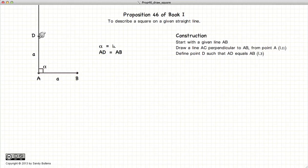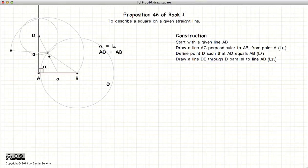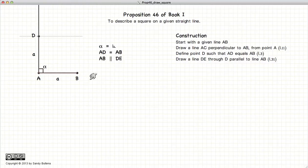Next, to draw a line parallel to AB through the point D. And to draw a line parallel to AD through the point B, labeling the intersection E.